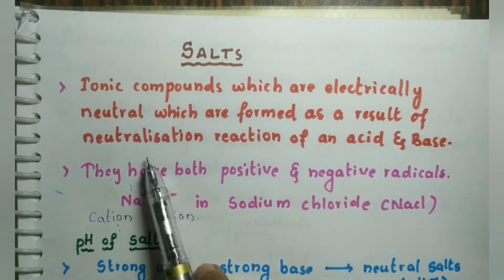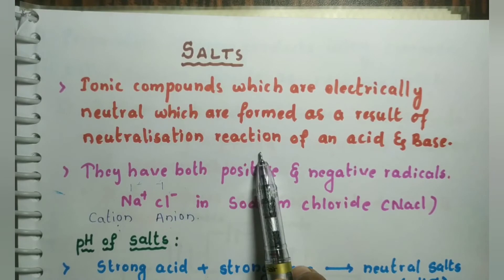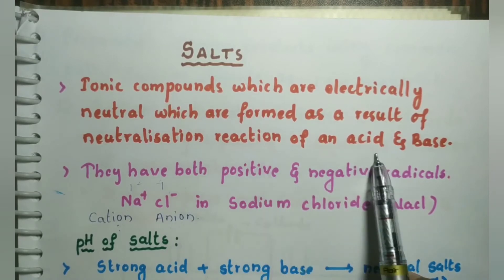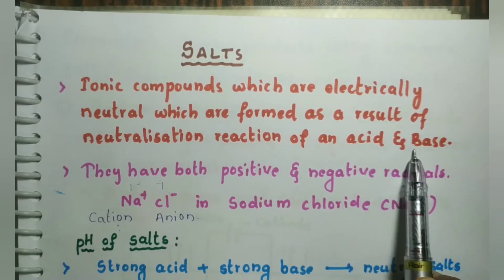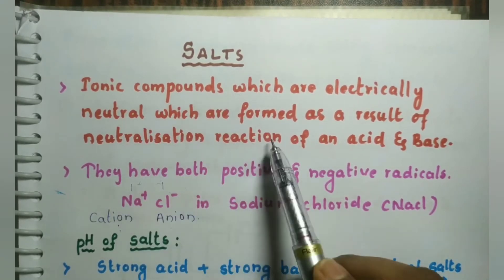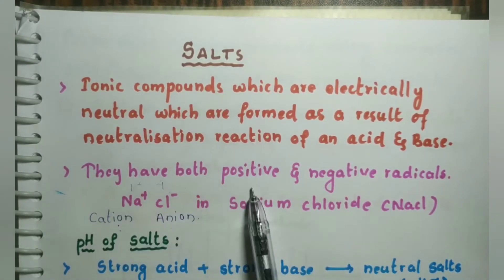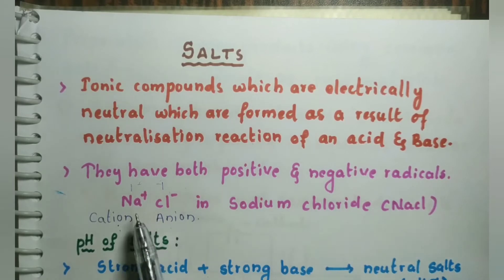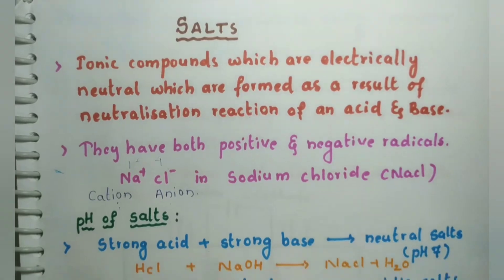Salts are formed as a result of neutralization reaction — when an acid and a base react, they form salt and water. They have both positive and negative radicals. So how do you decide the pH of salts?